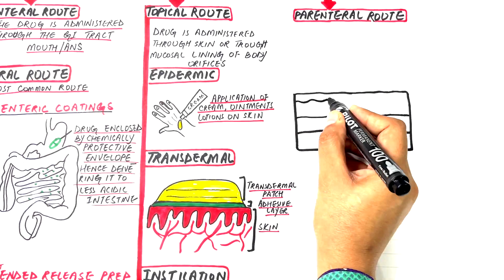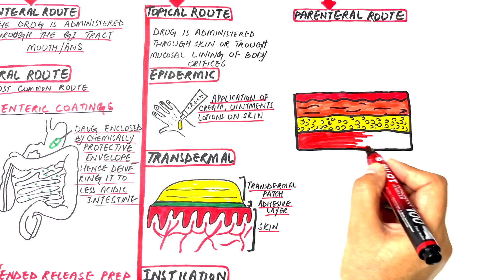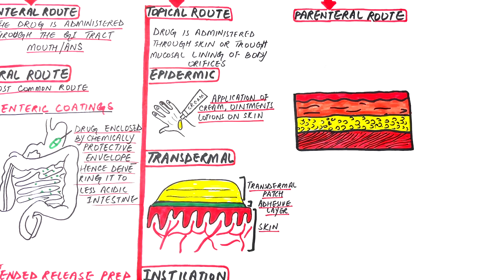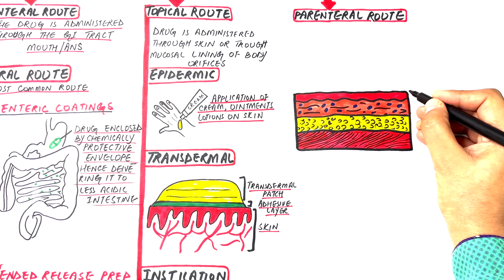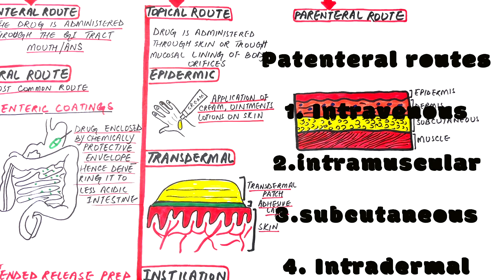The final route is the parenteral route, in which a drug is directly administered into the bloodstream. It is the only invasive route of drug administration and involves injection with a needle either into a vein, a muscle, or underlying skin tissues. In this route, the drug bypasses the first-pass effect, hence the bioavailability of the drug increases considerably. This route is useful in unconscious patients and when a rapid effect is needed. However, it is irreversible and may cause pain, fear, local tissue damage, and infections. The four main parenteral routes are intravenous, intramuscular, subcutaneous, and intradermal.